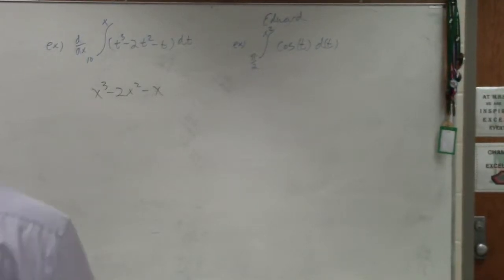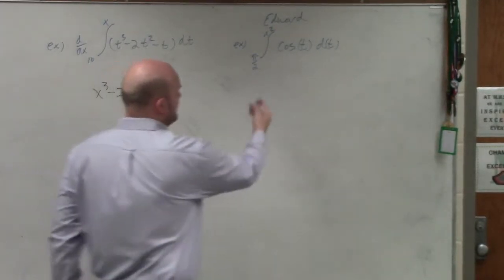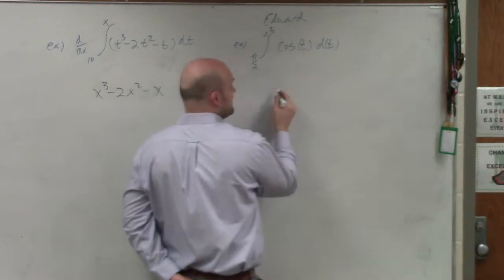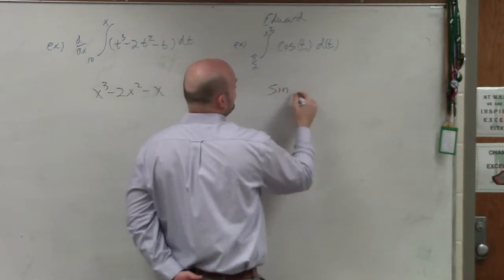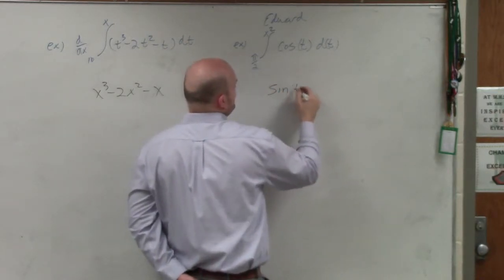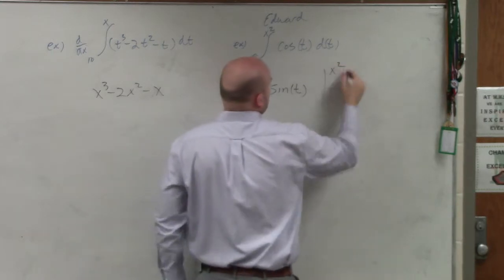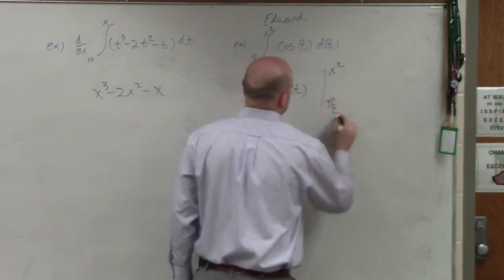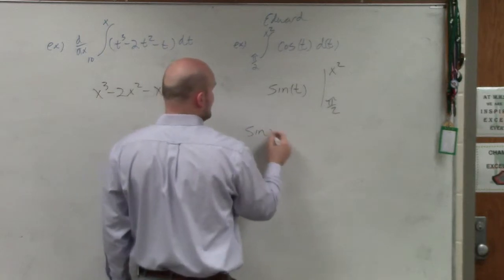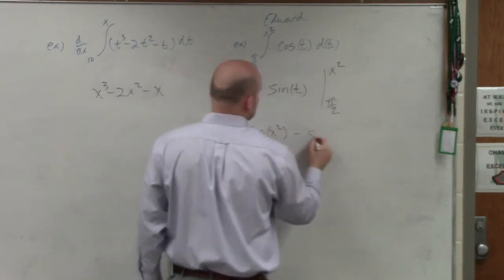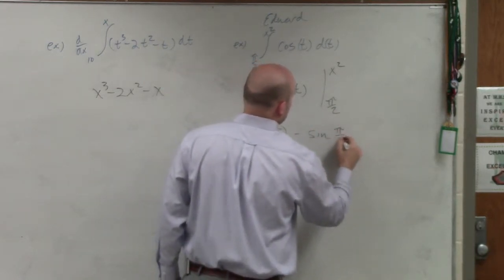Edward problem. But again, if you guys were to work this, if we were to go ahead and complete this and integrate it, then we'd have sine of sine of t from x squared to pi halves. And now when we evaluate this, we have sine of x squared minus the sine of pi halves.